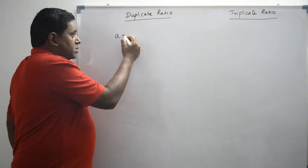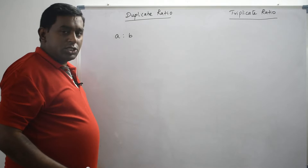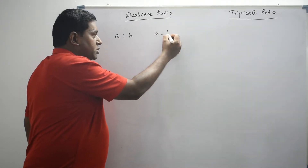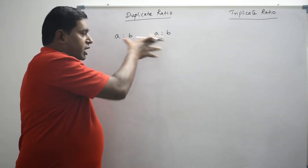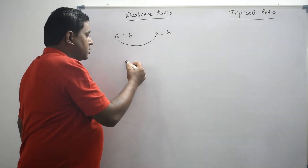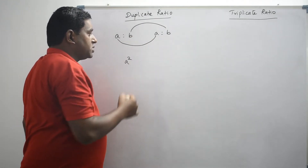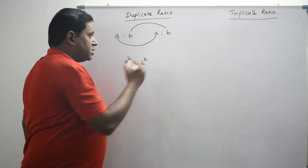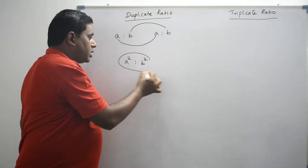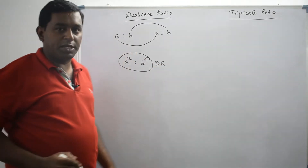Let's consider the ratio A to B. Now this ratio is going to be compounded with itself — that is, we are going to compound two same ratios. We have to multiply the first term and first term: A times A is A square. We have to multiply the second term and second term: B times B is B square. So, A square is to B square is the duplicate ratio of A is to B.